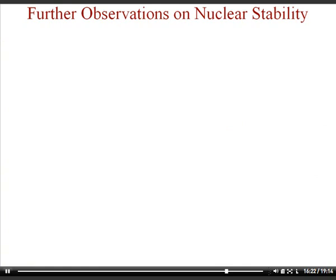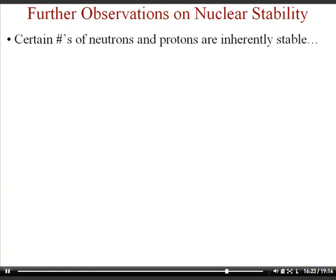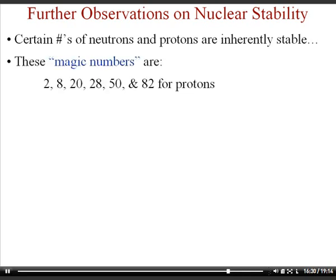Certain numbers of protons or neutrons are inherently stable — these are called magic numbers. For protons, the magic numbers are 2, 8, 20, 28, 50, and 82. For neutrons, they are 2, 8, 20, 28, 50, 82, and 126. Nuclei with these magic numbers are especially stable.